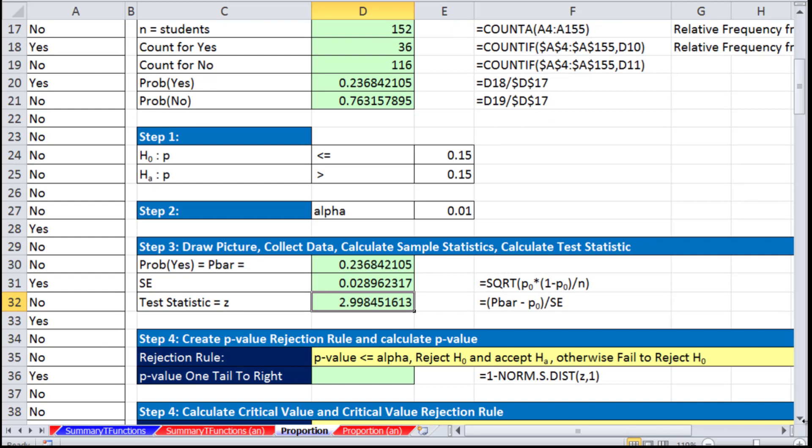The distribution we use for proportions is the Z distribution. That's 2.99, almost three standard deviations above. This is the seventh or eighth test we've done in this chapter. That's way above three standard deviations, so we're probably rejecting the null and accepting the alternative.